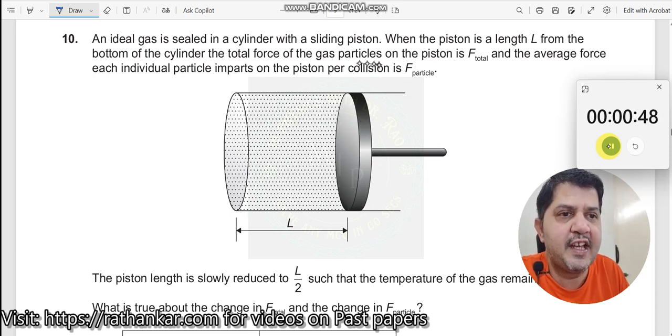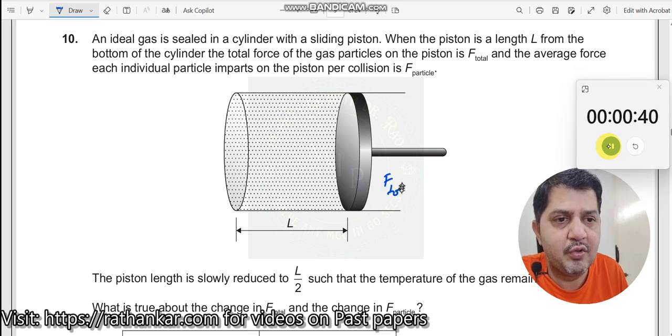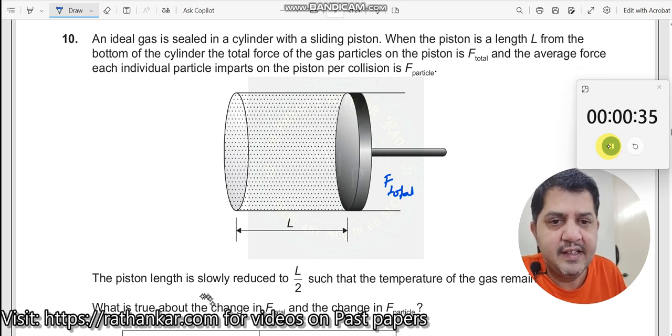The total force of the gas particles on the piston is F_total. Initially it is F_total. And the average force each particle imparts on the system per collision is F_particle. The piston length is slowly reduced to L by 2.